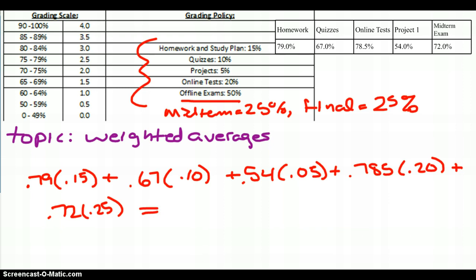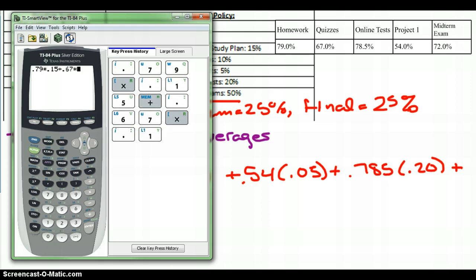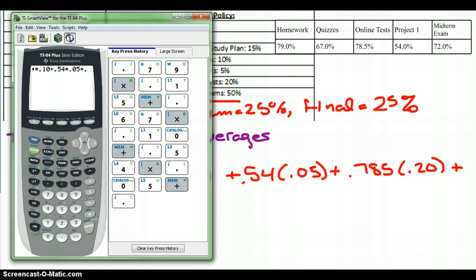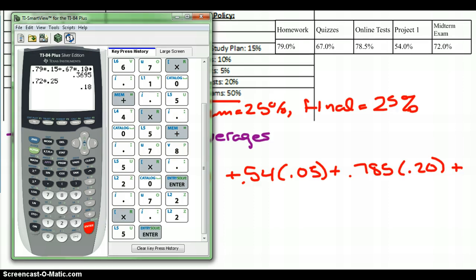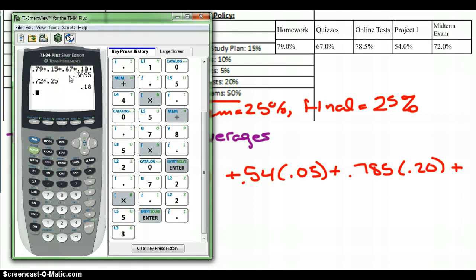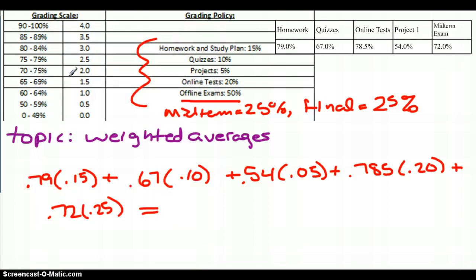Let me get my calculator. I need .79 times .15, plus .67 times .10, plus .54 times .05, plus .785 times .20, plus .72 times .25. Looks like I might have hit a key wrong. I hit enter there on accident, so let's just add those two up. If I added them all together, I should get .5495. Just remember that number, .5495.